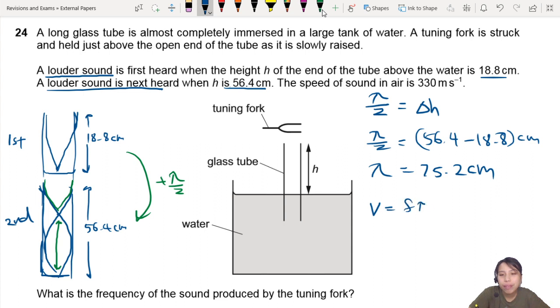Velocity will be F lambda. So velocity is... Sorry, not velocity. Frequency. 330 meters per second. Some frequency. Oh! I should probably change my lambda to meters. So 0.752 meters.